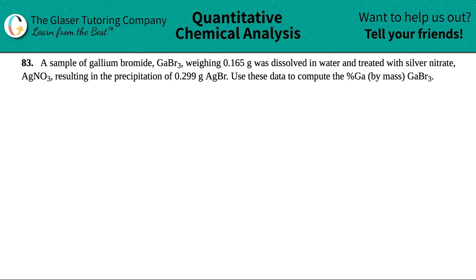Number 83. A sample of gallium bromide, which is GaBr3, weighing 0.165 grams was dissolved in water and treated with silver nitrate, which is AgNO3, resulting in the precipitation of 0.299 grams of silver bromide, AgBr. Using these data to compute the percent gallium by mass in GaBr3.